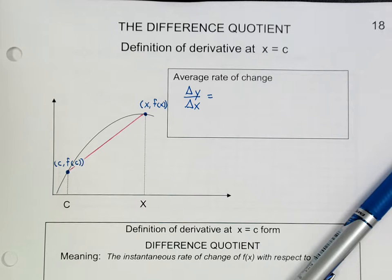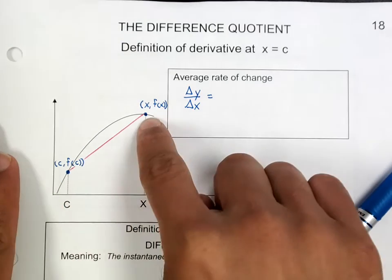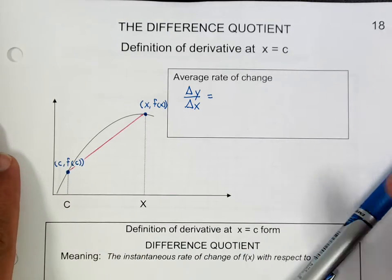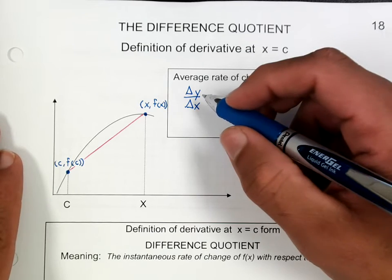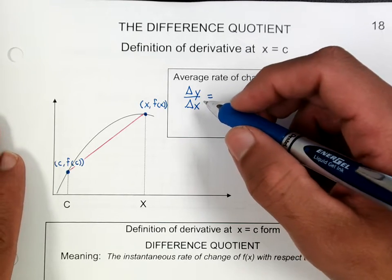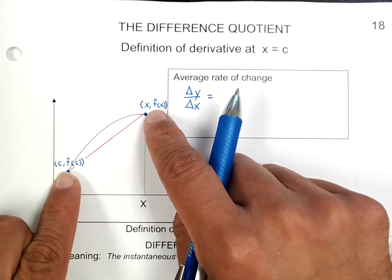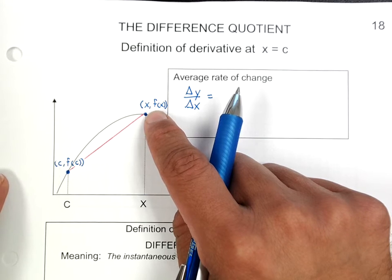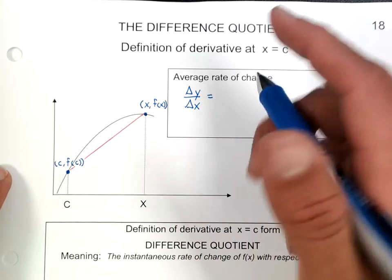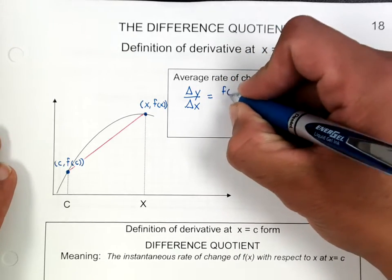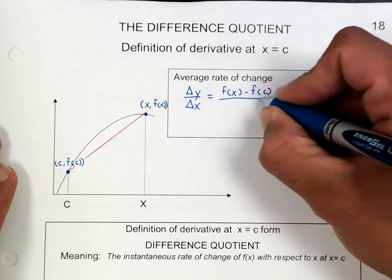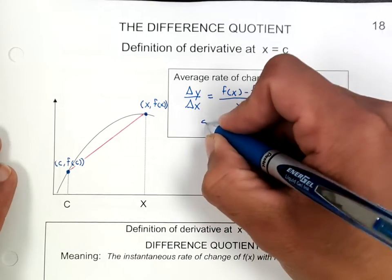So if we're trying to figure out the slope of the secant line — remember, the secant line means you're touching two points on that curve — that's just the change in y over the change in x. Using these coordinates, notice that this point is (c, f(c)), and the point on the right is labeled (x, f(x)). So the change in y would be f(x) minus f(c) over x minus c, and this will find the slope of the secant line.